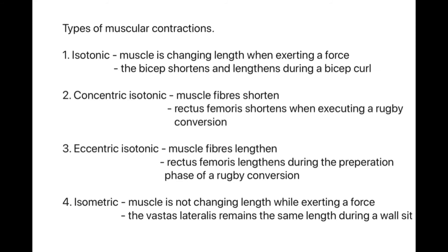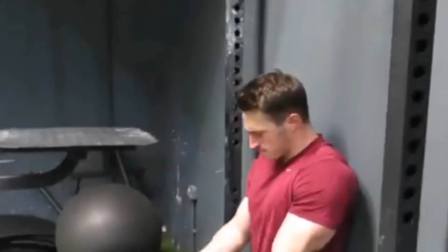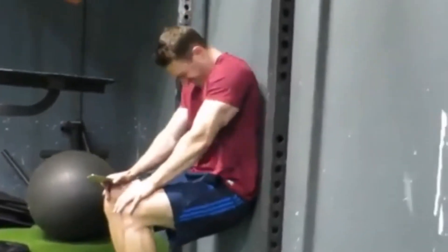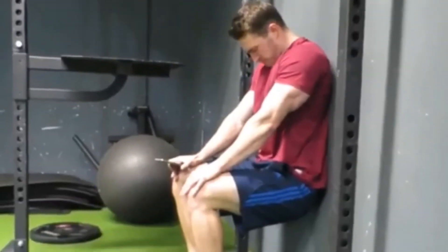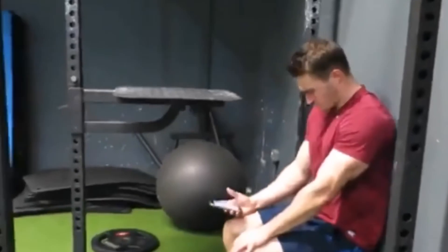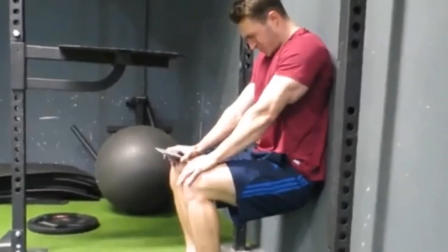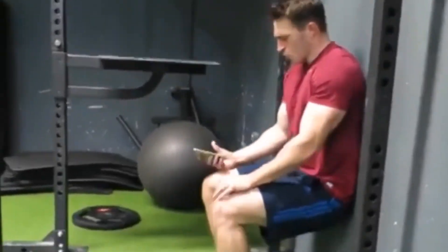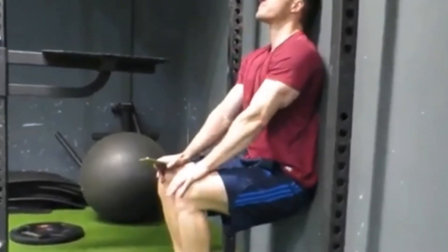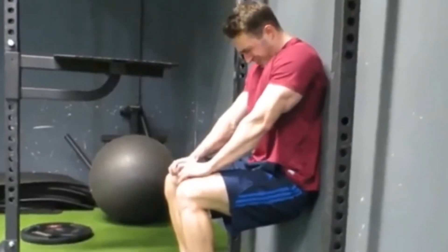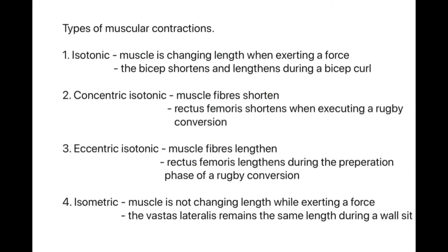Finally, we look at the isometric muscular contraction. This is unique because the muscle is not changing length when exerting a force. The best example is a wall sit - the vastus lateralis, which is part of the quadricep group, remains the same length to keep you in that wall sit position. This is called static strength - it's where the muscle does not change length to resist against a force.